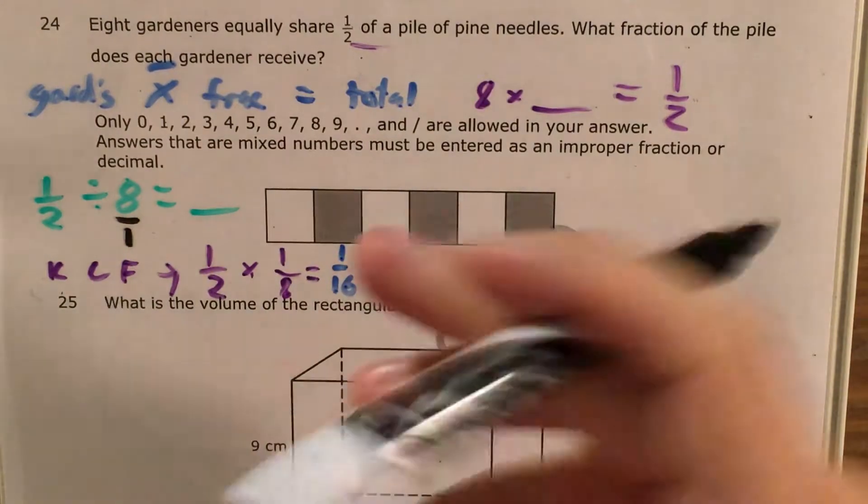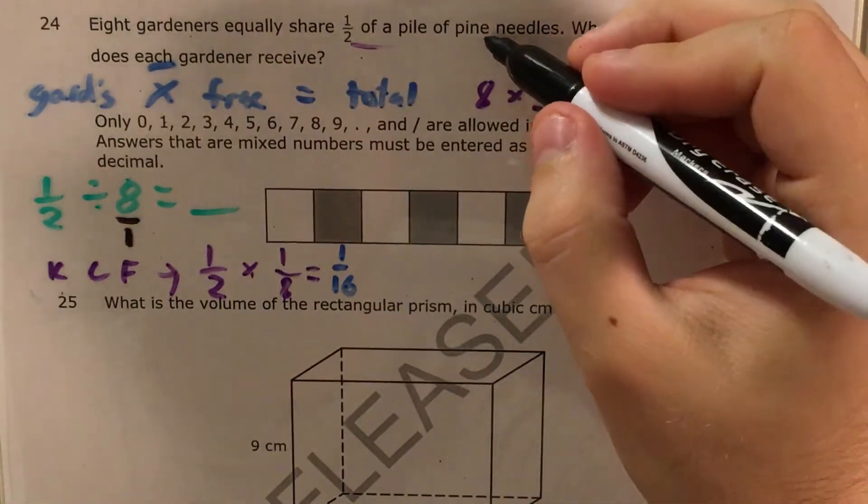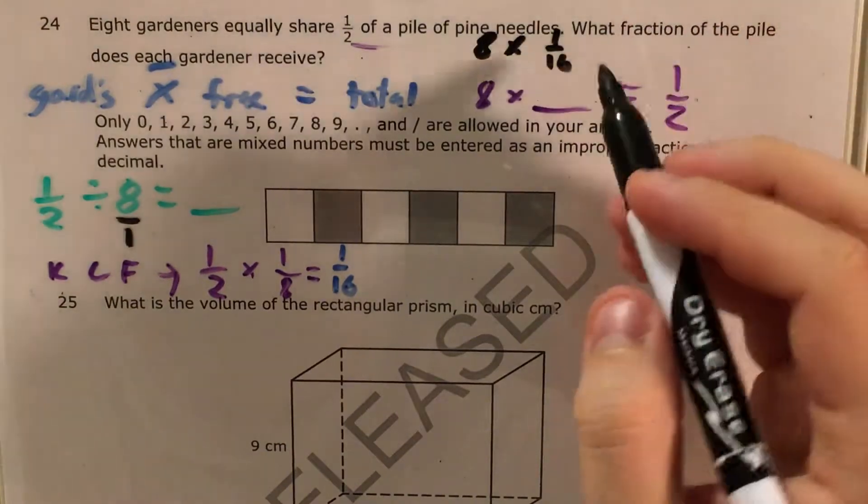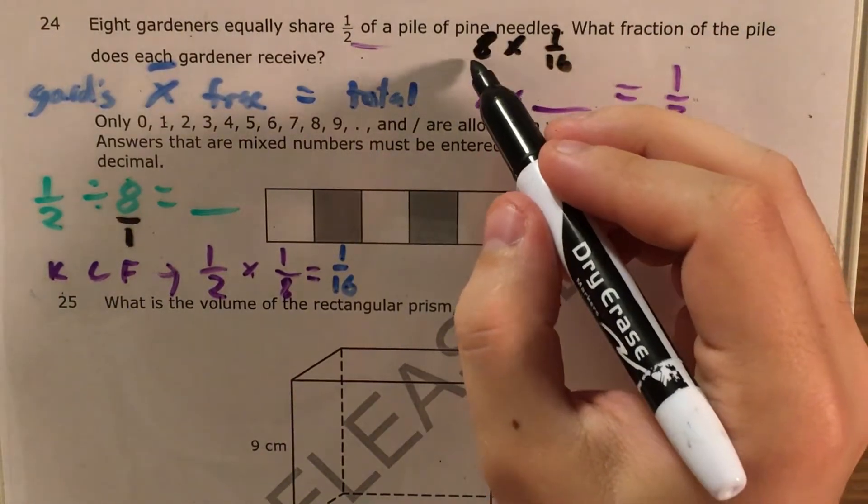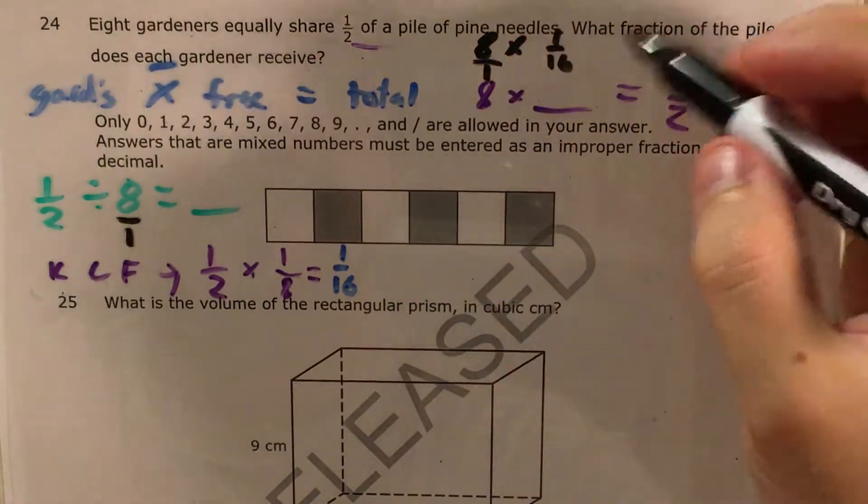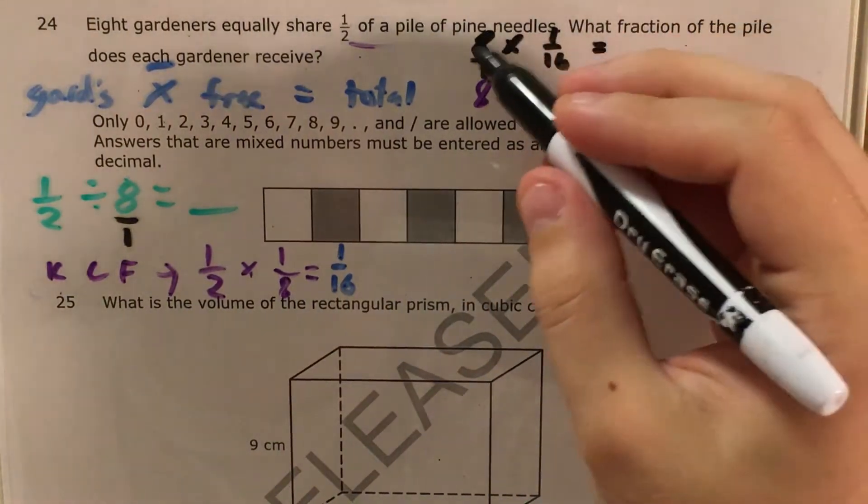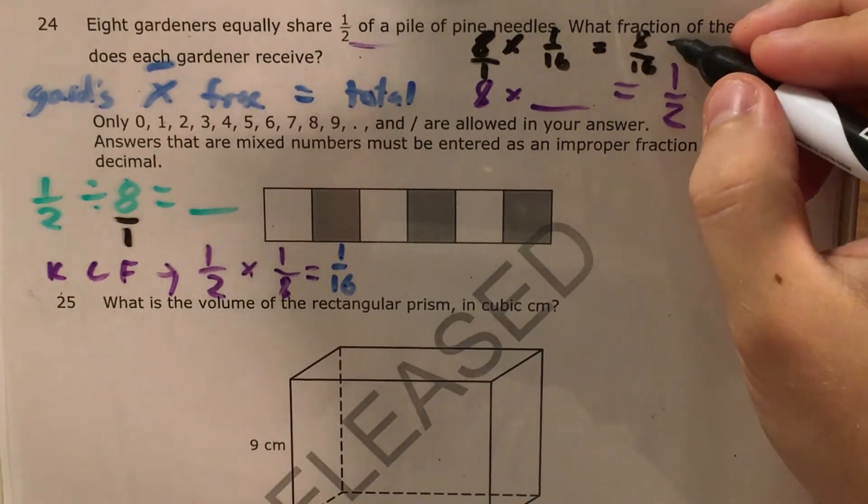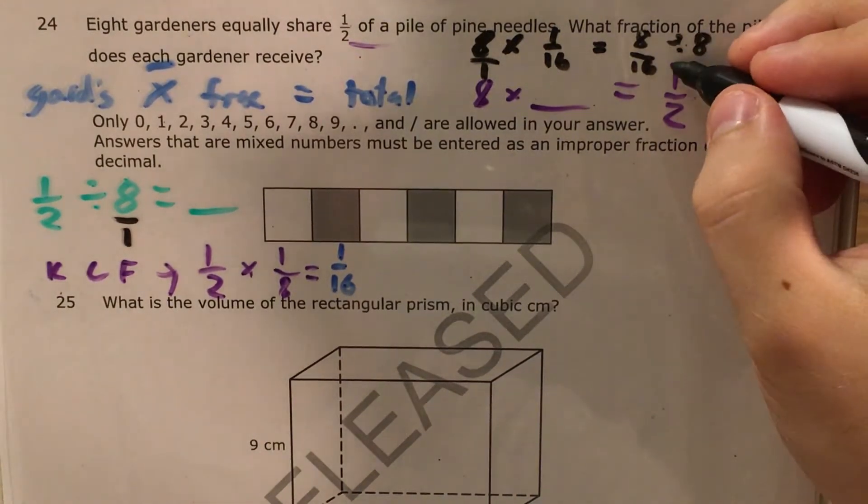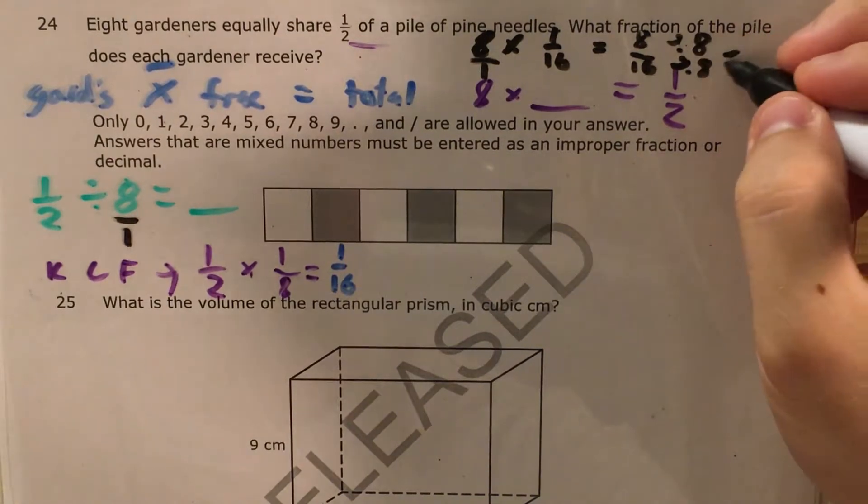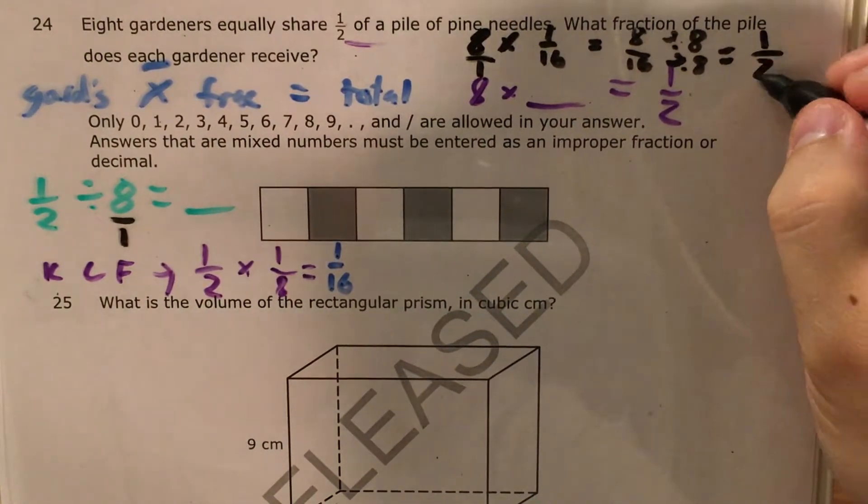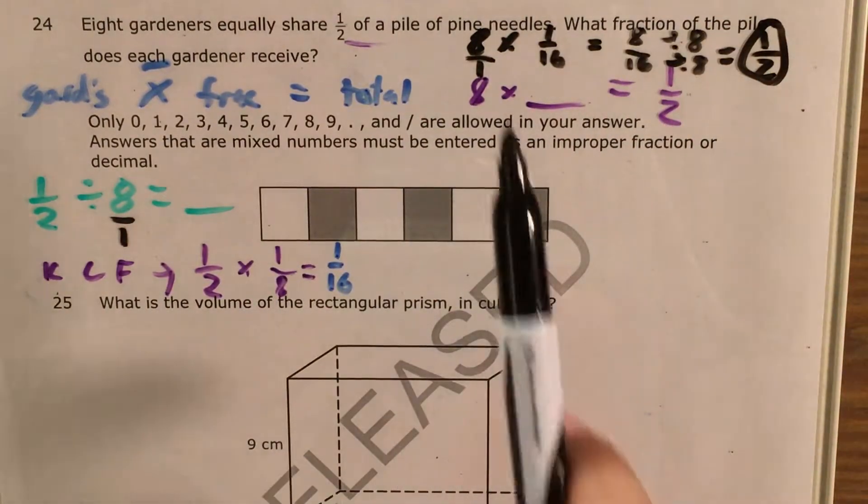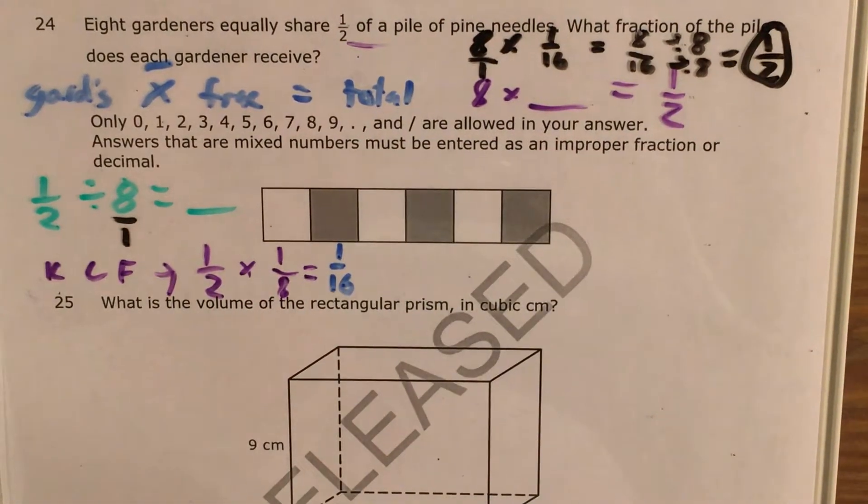To check this answer, I'll plug it back in and see if 8 times 1/16 equals 1/2. I'll take 8 and make it 8 over 1 again, then multiply across to get 8 over 16. Simplifying by dividing both by 8 gives me 1 over 2. This confirms that 1/16 was the correct answer to this problem.